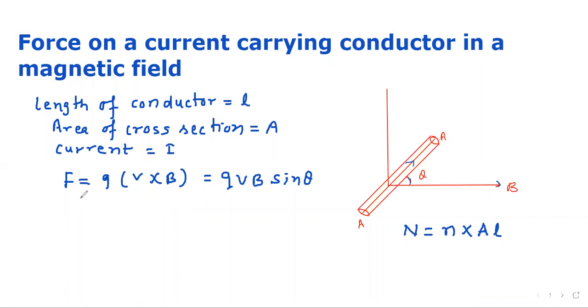So, total force. This is F1 for a single electron. So, total force is F, that will be N times Q V B sin theta. If we put the value of N, N is n A L Q V B sin theta.